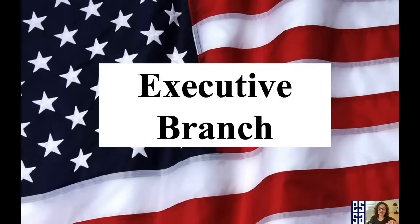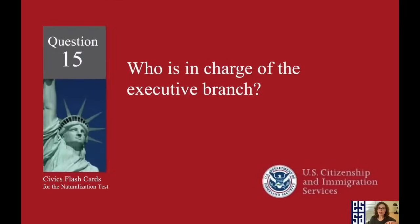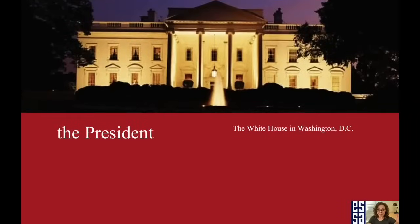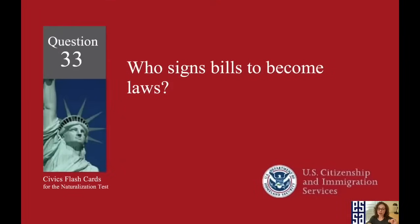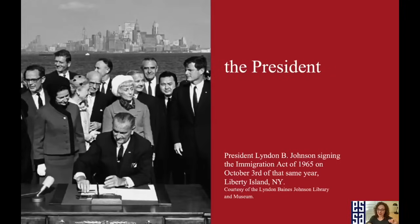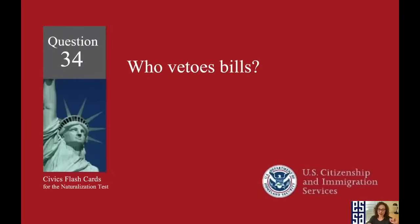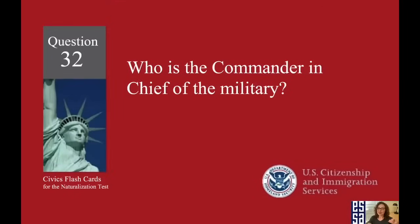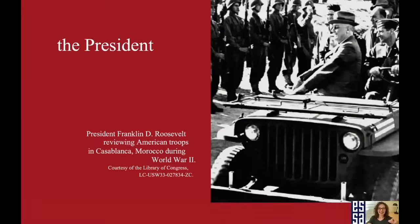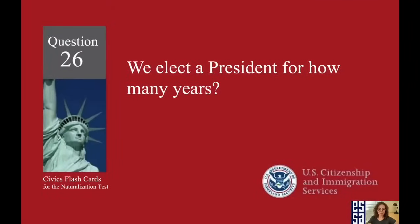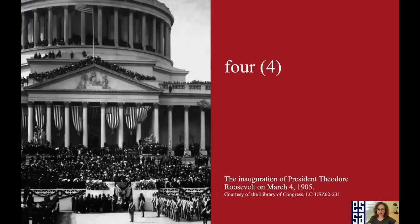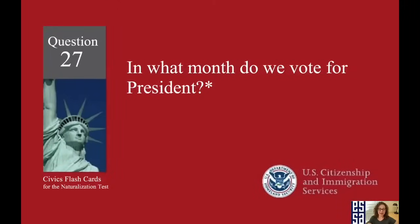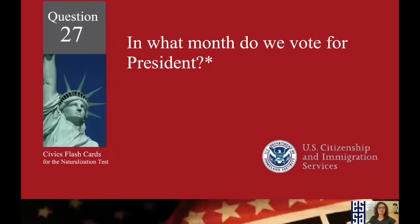Let's talk about the executive branch now. Who is in charge of the executive branch? The president. Who signs bills to become laws? The president. Who vetoes bills? The president. Who is the commander-in-chief of the military? The president. We elect a president for how many years? Four. In what month do we vote for president? November.